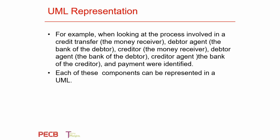I've talked about UML, so using these examples, everyone should be able to drop these UML representations. When looking at the process involved in a credit transfer — the money receiver, you can draw the actor, the action — the debtor, the debtor's agent (the bank of the debtor), then the creditor, the money receiver, the debtor agent, and the creditor agent. You can model this and present it to the business user to show them exactly how it's going to be done.